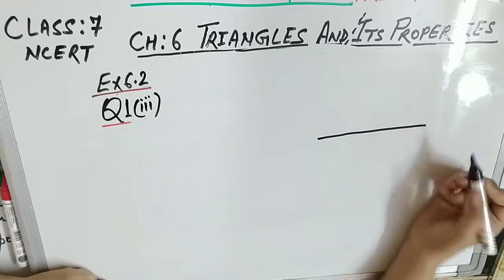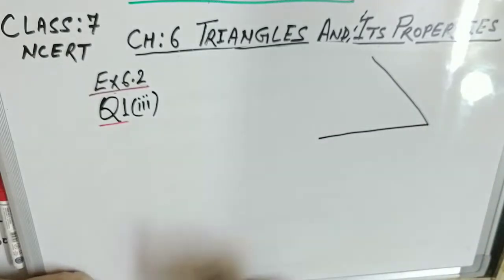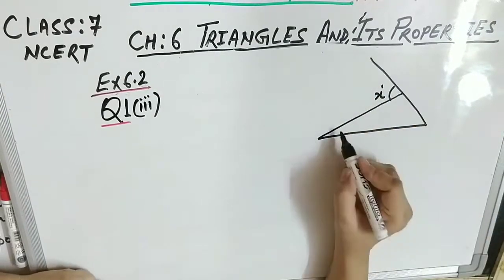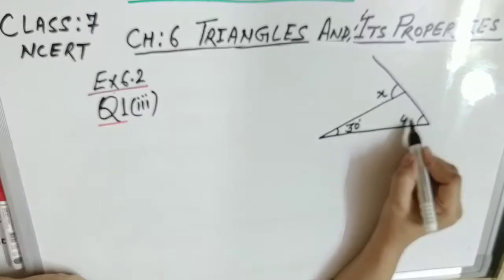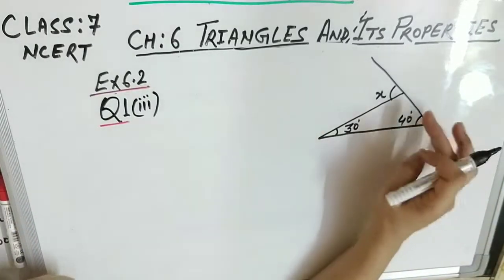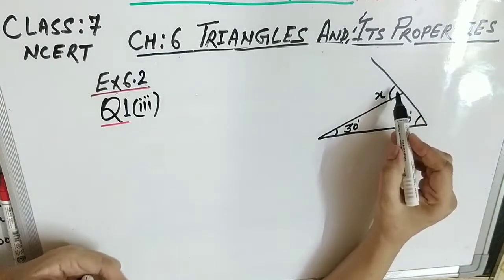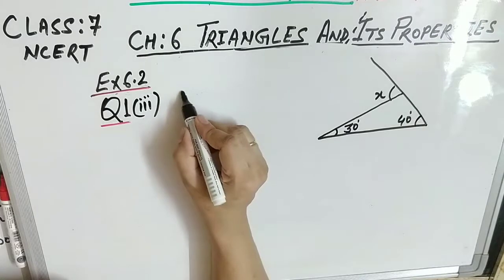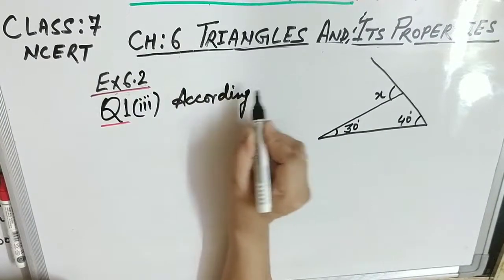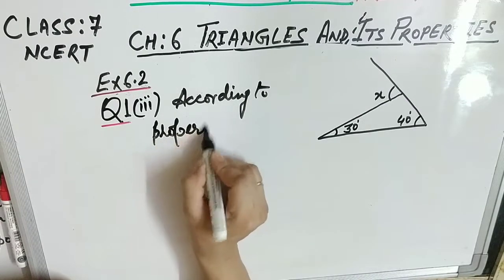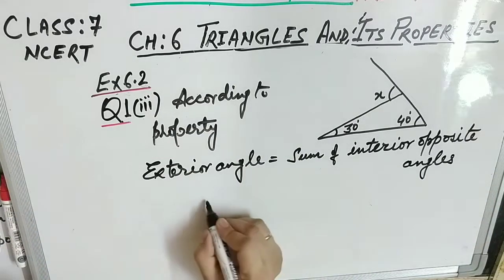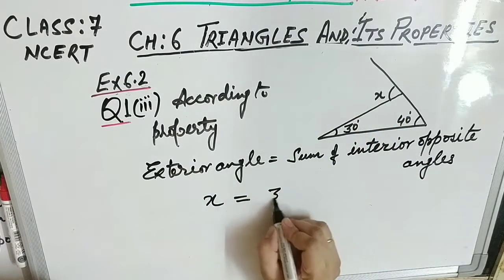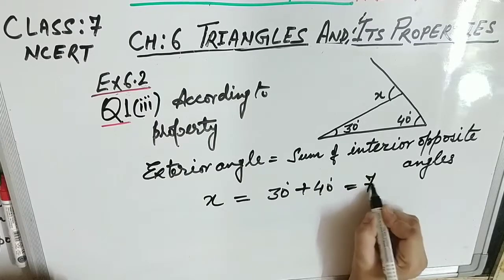Question number 3: all are simple questions — directly apply the property. The exterior angle is x, and the two opposite interior angles are 30° and 40°. By the property, the exterior angle equals the sum of opposite interior angles, so x = 30° + 40° = 70°.